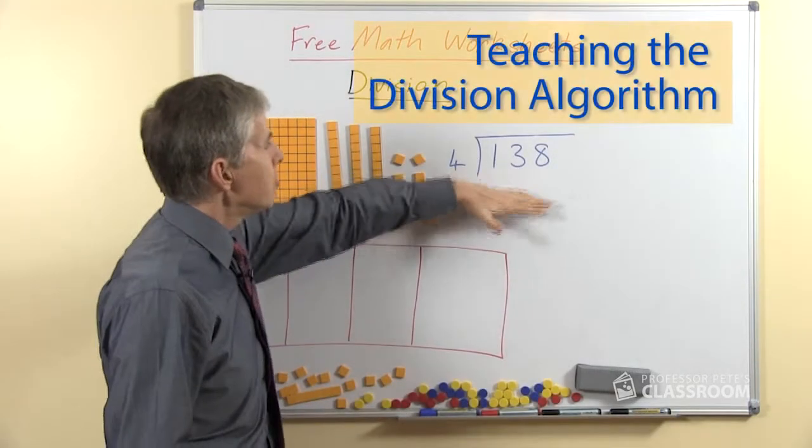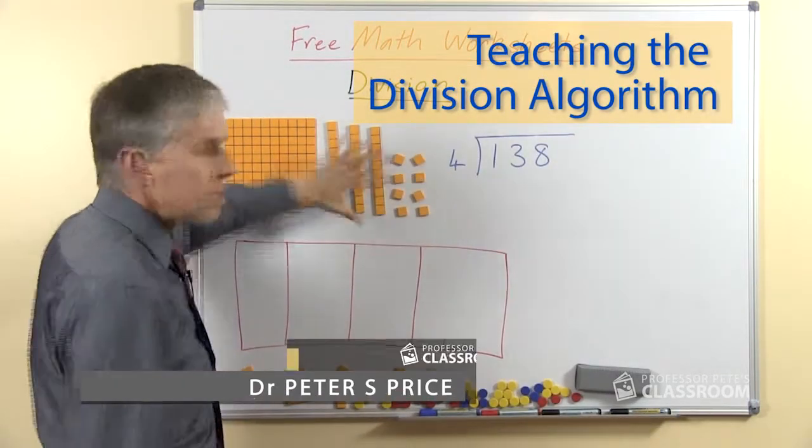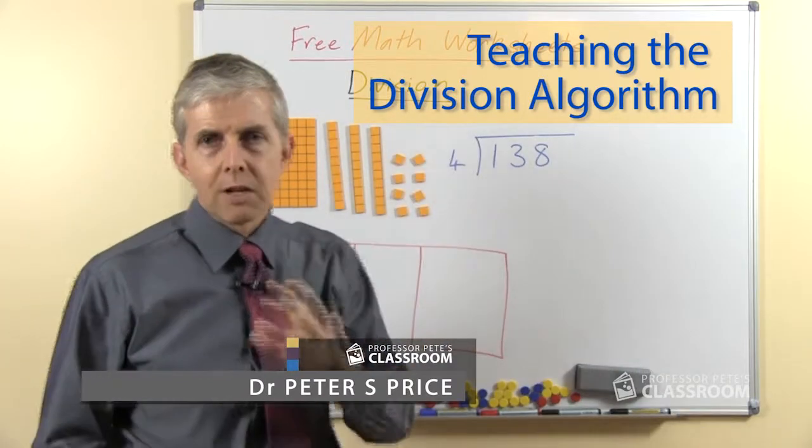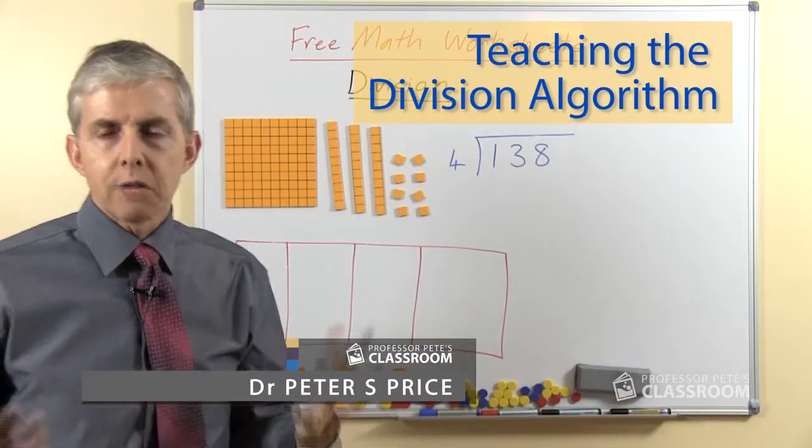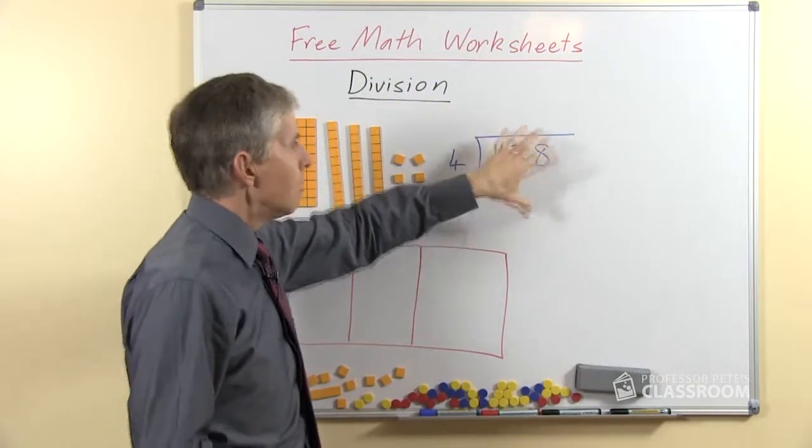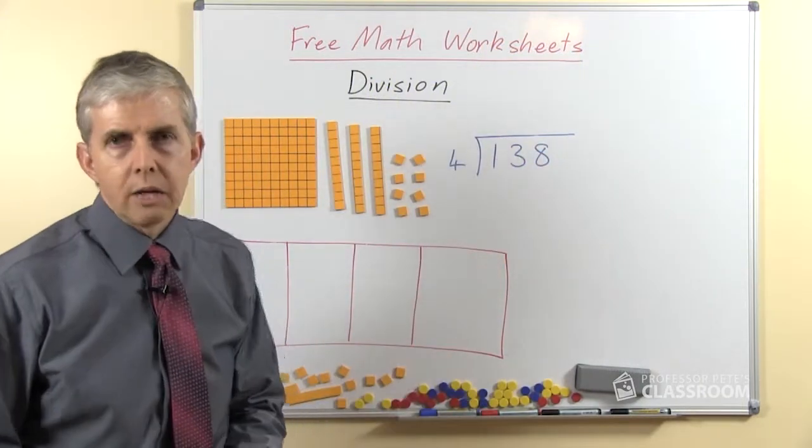This is our example question today: 138 divided by 4. I'm using base-10 blocks because they do such a fantastic job of illustrating the process and revealing what's hidden and what this process actually involves.